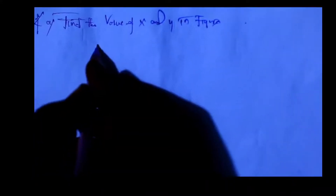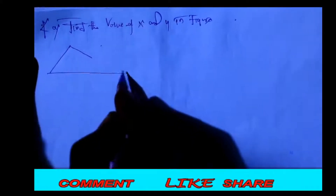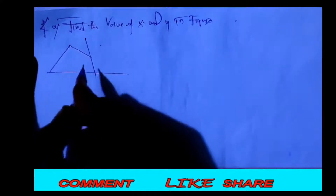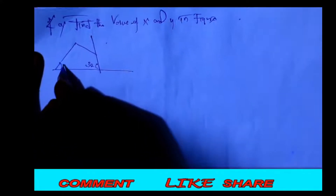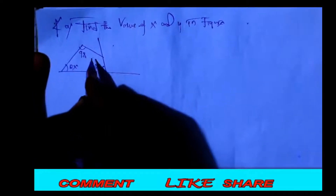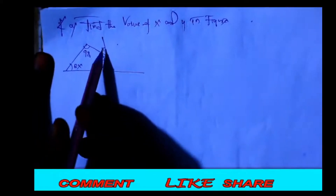We have a figure like this one. Let me draw somewhere here. Like this one here: 32, here 2X, here 98, and here is Y and here it's X. So this is the figure where we need to find the value of X and Y.